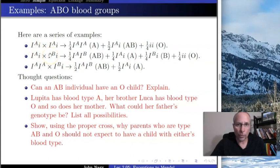Little i, big I^B, which of course we write as big I^B, little i. Type B would happen a quarter of the time. And little i, little i happens a quarter of the time. So that would be type O.